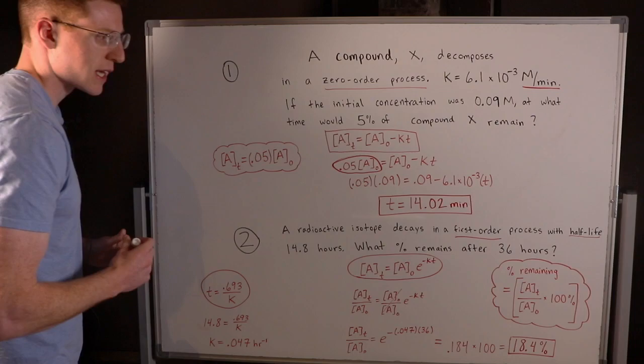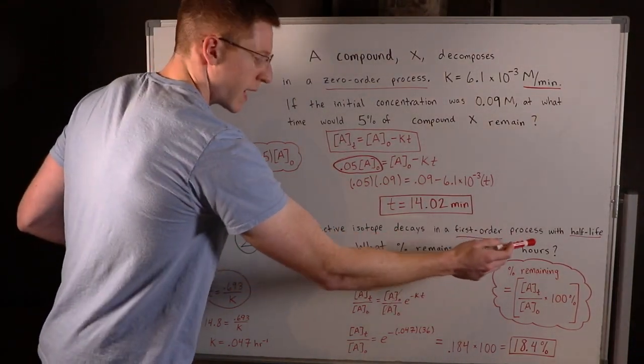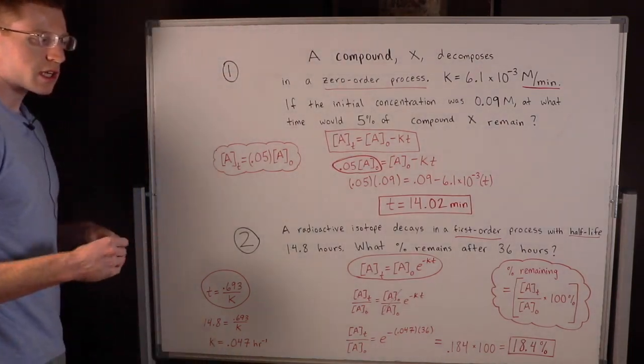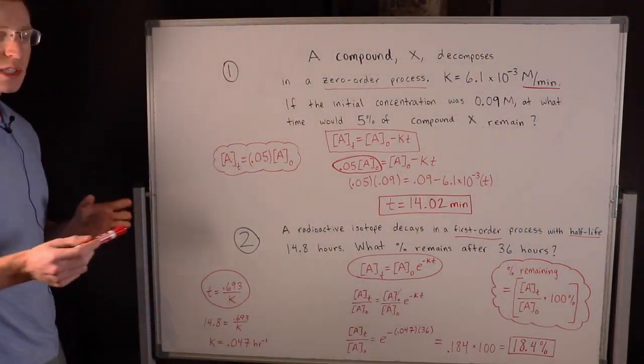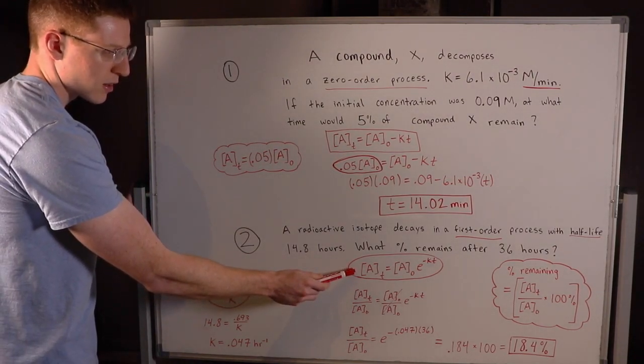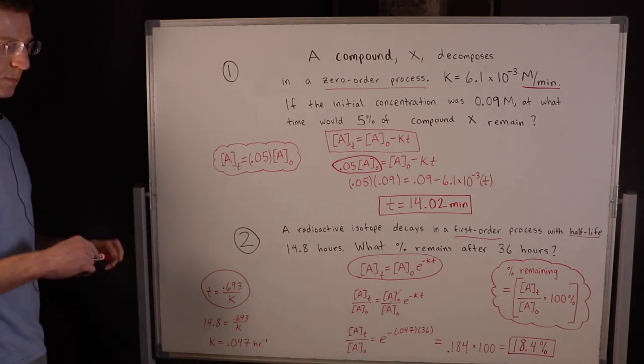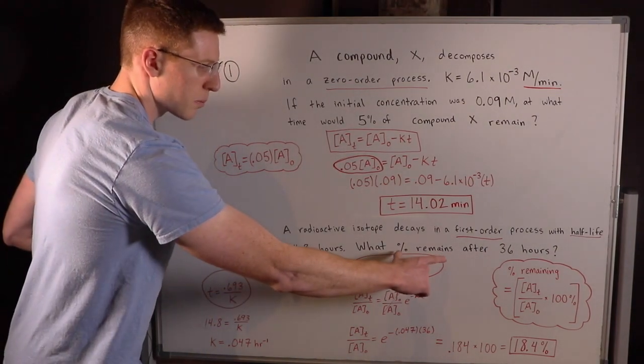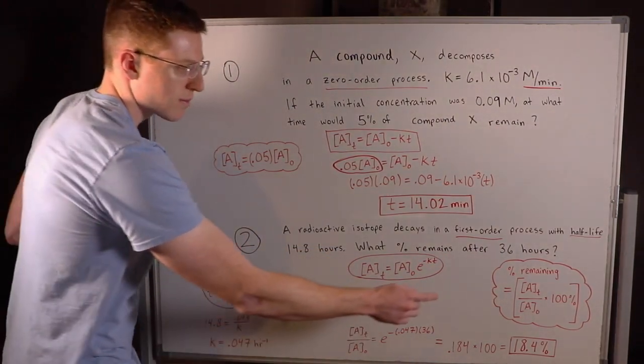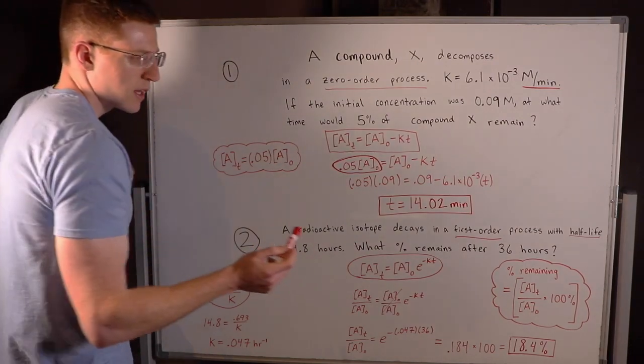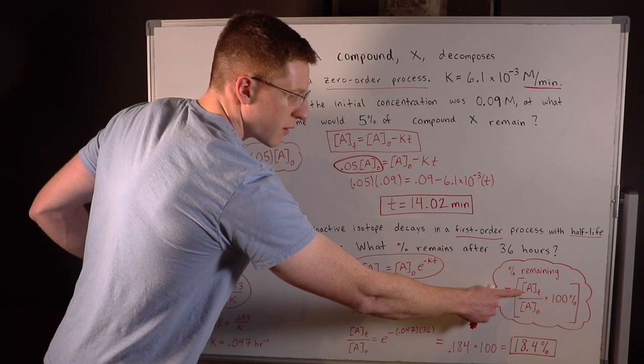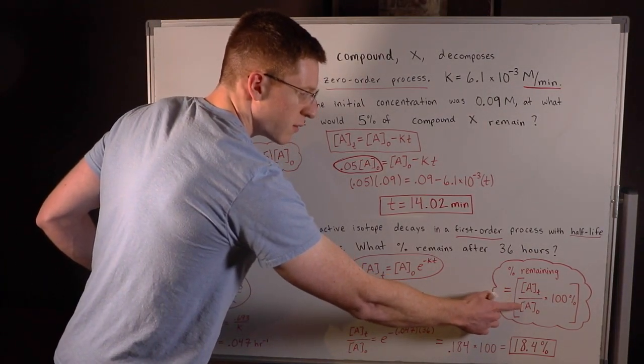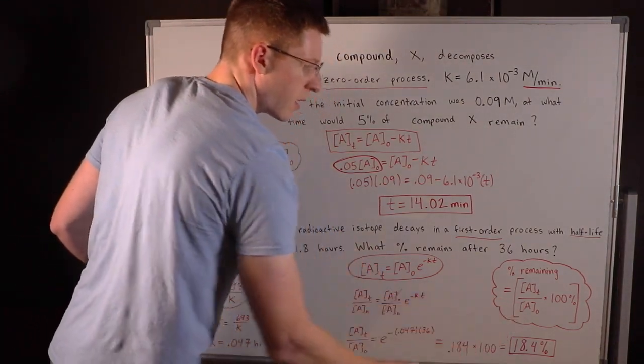Number two says a radioactive isotope decays in a first-order process with a half-life of 14.8 hours. What percentage of this radioactive isotope remains after 36 hours? Since I saw first-order and half-life, the first things I wrote down were the first-order integrated rate law and the half-life formula for a first-order process. You have to use both in this situation. But the real trick to this problem is knowing how to mathematically represent this percentage remaining concept.